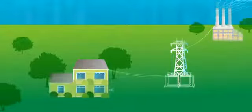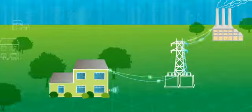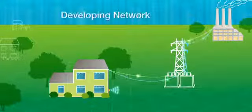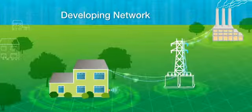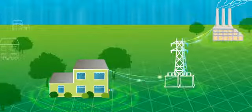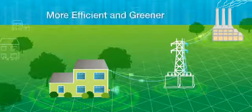The smart grid introduces a two-way dialogue where electricity and information can be exchanged between the utility and its customers. It's a developing network of communications, controls, computers, automation, and new technologies and tools working together to make the grid more efficient, more reliable, more secure, and greener.